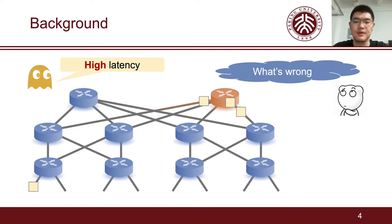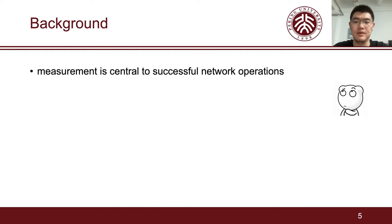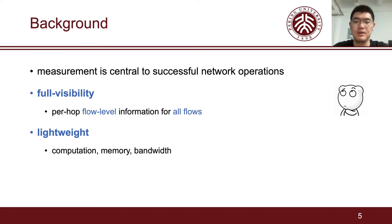Nowadays, the community consensus is to measure at flow level granularity. In our opinion, an ideal measurement system should meet three requirements. First, full visibility to acquire any desired per-hop flow level information for all flows. Second, lightweight in terms of computation, memory, and bandwidth. And third, robustness to resist link failures and device failures.